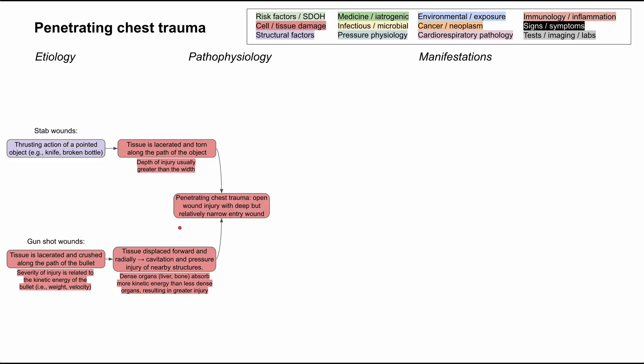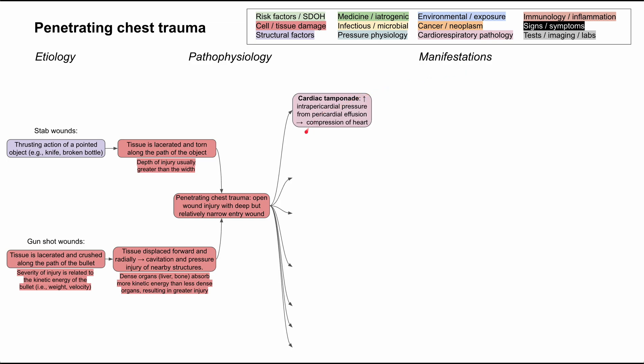With both stab wounds and gunshot wounds, you end up with penetrating chest trauma, and the manifestations can vary pretty widely. There's a lot going on in the chest from the skin all the way back to the spine. The manifestations depend on what you're breaking and how bad you're breaking it. This list is not exhaustive — it's really just an overview of what you can see.